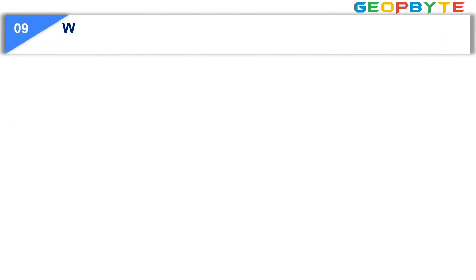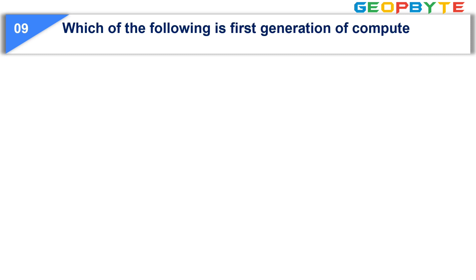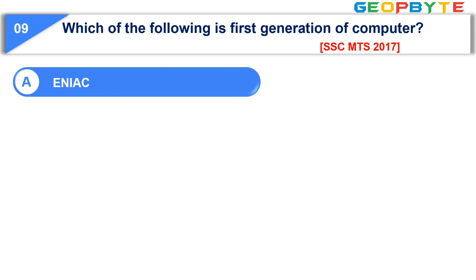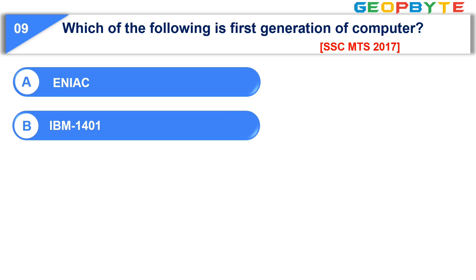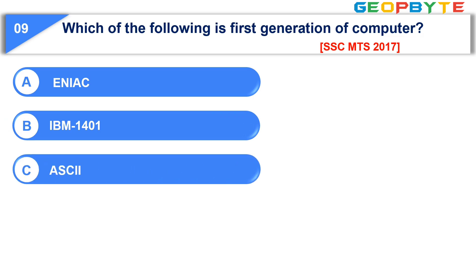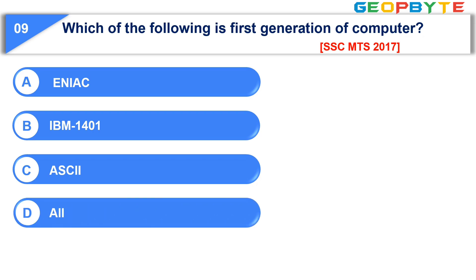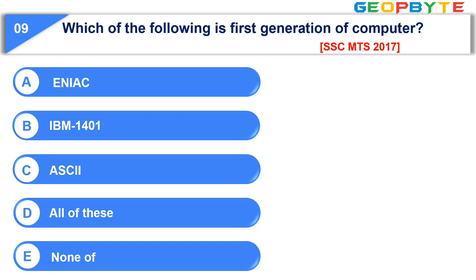Question number nine: Which of the following is a first generation computer? Option A: ENIAC; option B: IBM 1401; option C: ASCII; option D: all of these; option E: none of these. The correct answer is option A: ENIAC.